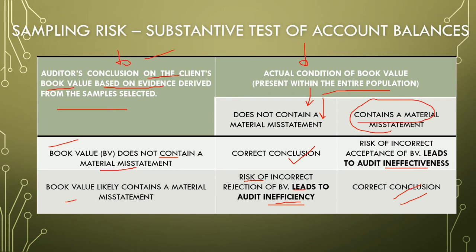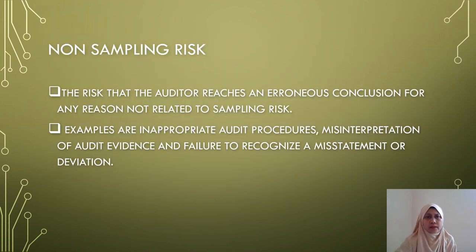For the test of controls, that will lead to the test of detailed balance. But for the test of detailed balance — also known as the substantive test of account balance — this leads to the issuance of the auditor's opinion. Non-sampling risk is the risk that the auditor reaches an erroneous conclusion for any reason not related to sampling risk. Examples include inappropriate audit procedures, misinterpretation of audit evidence, and failure to recognize a misstatement or deviation.